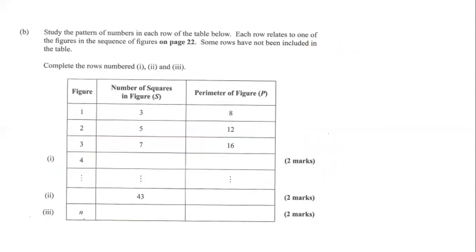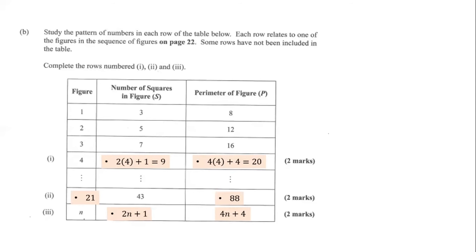Part 3 asks us to solve for n, which means finding the general formula — something we already determined at the start. Whenever you see n, it is asking for the general formula. For the number of squares it is 2n+1, and for the perimeter it is 4n+4. Filling in the table completely: row 1 has 9 squares and perimeter 20; row 2 has figure 21 and perimeter 88; and we now have our complete table for all 6 marks.